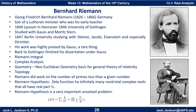His work was highly praised by Gauss, which was a pretty rare thing — Gauss didn't hand out compliments very often. He went back to Göttingen and finished his dissertation under Gauss, about what is now called the Riemann Integral. He also did complex analysis and geometry, working with non-Euclidean geometry, and his work on Riemannian geometry was the basis for the general theory of relativity — Albert Einstein's work — later on in the next century. He also did work with topology.